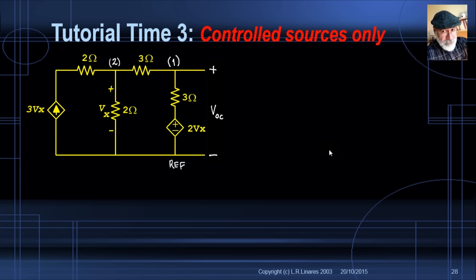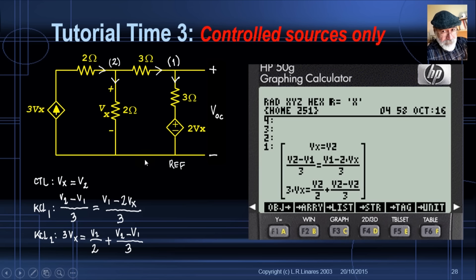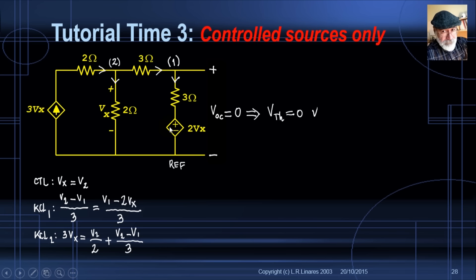Let me prove it using MNA: reference node, node 1, node 2, branch currents. Write the CVL equation for the controlling variable Vx = V2, then KCL equations for nodes 1 and 2. Solving gives V1 = VOC = 0, confirming V_TH = 0. A circuit with only controlled sources has an equivalent circuit consisting of only a single resistor — we need to find that resistor.